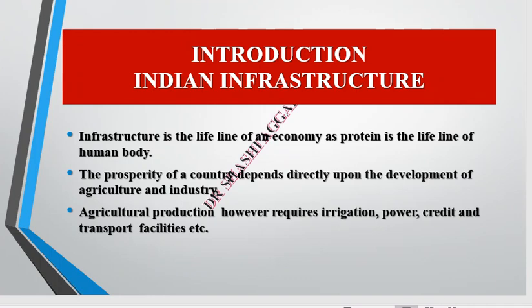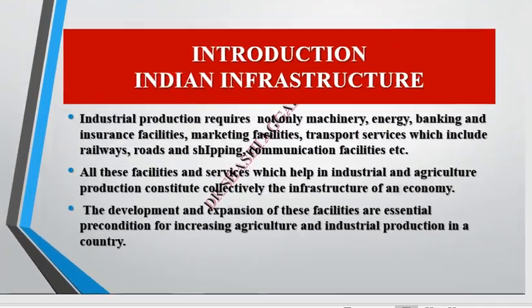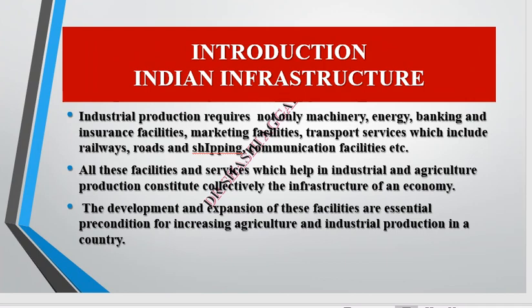Just as human beings need protein to grow, the economy needs infrastructure — it is the lifeline of the economy. The prosperity of any country depends on its agriculture sector, industry sector and service sector. Agriculture needs power, credit and transport facilities. Industry requires machinery, energy, banking, insurance, marketing, transport services, railways, roads, shipping and communication facilities. Both industry and agriculture require infrastructure.